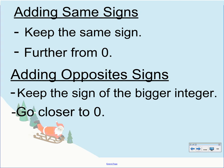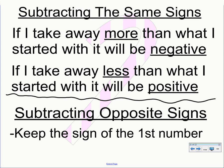When adding opposite signs — a positive plus a negative, or a negative plus a positive — the order doesn't matter. You keep the sign of the bigger integer. So if I have five plus negative seven, I know I'm going to have a negative result because the negative number is bigger. In this situation I'm actually getting closer to zero.